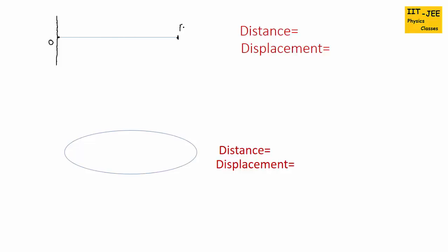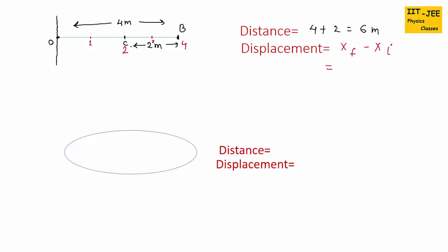Let's take an example for this definition. Suppose a person starts from the origin and moves 4 meters up to point B, then returns and travels to point C, 2 meters back. For distance — total length without any sign — first he travelled 4 meters and then 2 meters, so 4 plus 2 equals 6 meters. For displacement using xf minus xi: the final point is C with position 2, initial point is the origin with position 0, so 2 minus 0 equals 2.